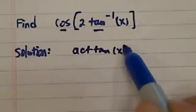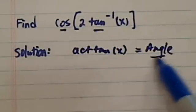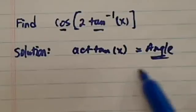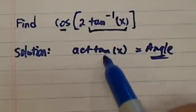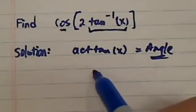Arctangent of x is always an angle. This is important because if you don't recognize this portion as an angle, it gets really frustrating for you quickly.